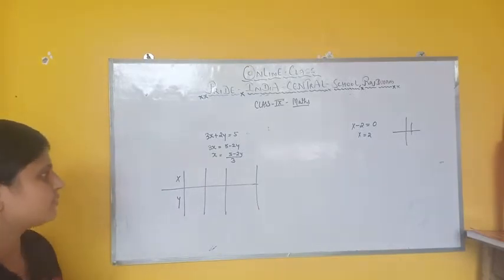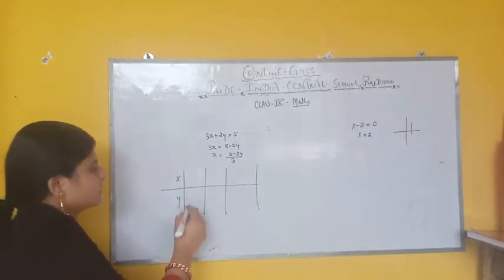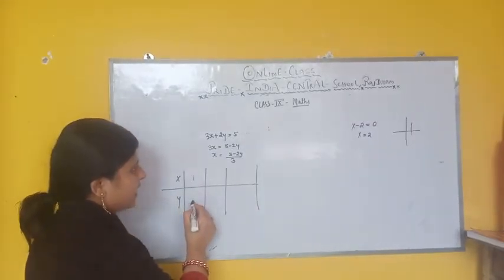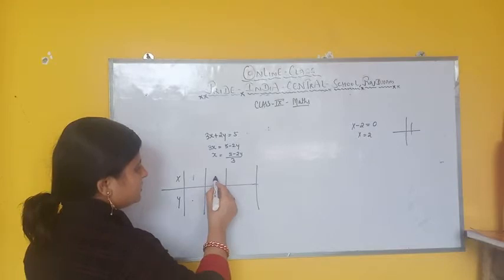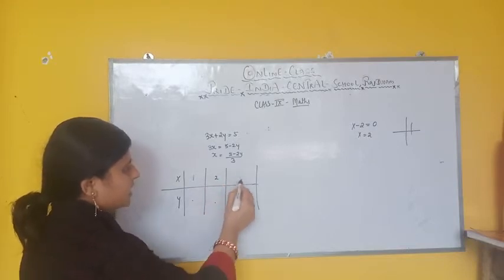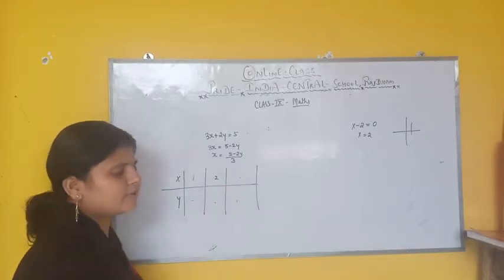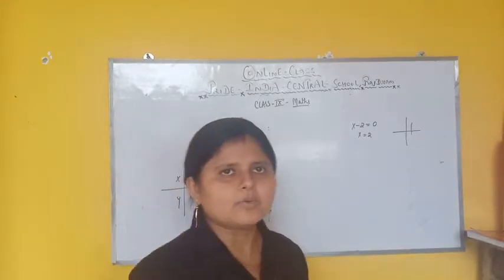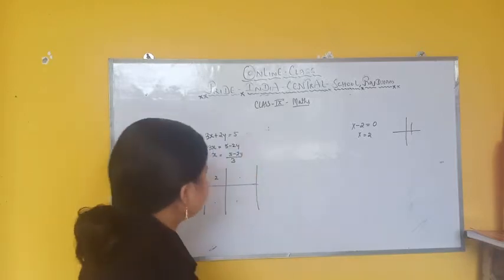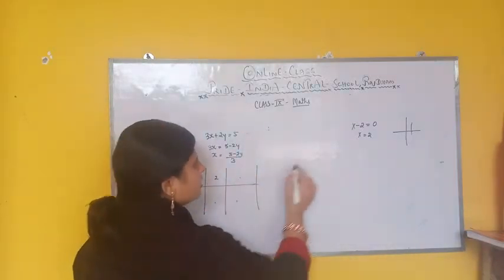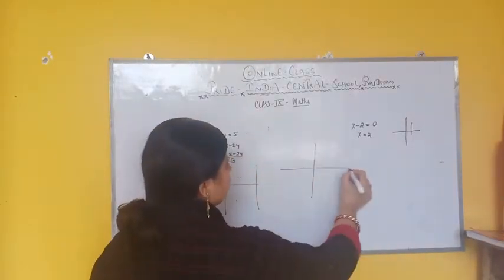Then put the values: if x is 1, what will be y? If x is 2, what will be y? In this way you will get certain values. Once the values are there, you will get the solution.